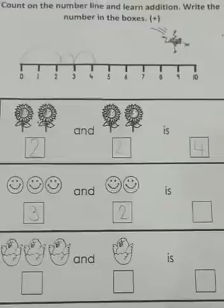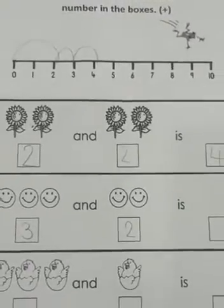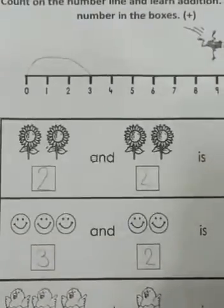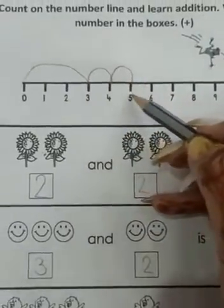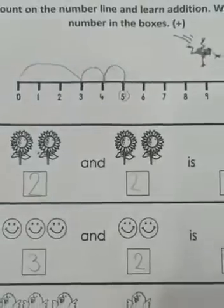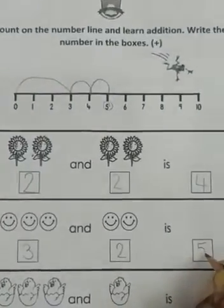So let's count it all together. 1, 2, 3. And let's jump 2 times. 1, 2. So the number is 5. Absolutely right. Super.